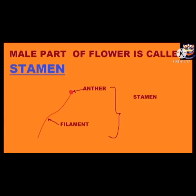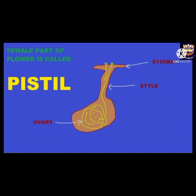At the top of the male reproductive organ is the anther, and right below it is the stalk which is called the filament. The female part of a flower is called the carpel or pistil, and it produces gametes called ovules inside an ovary. For reproduction to be successful, pollen grains and ovules must be brought together through a process called pollination.